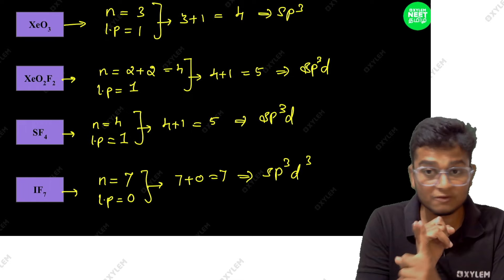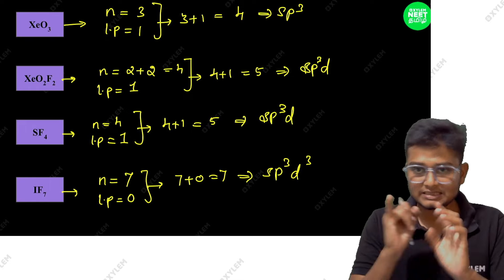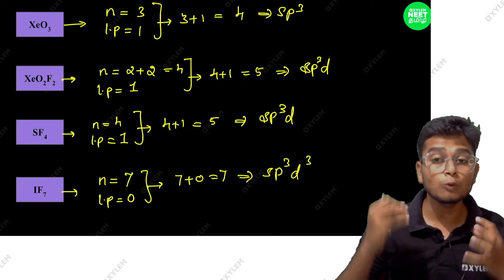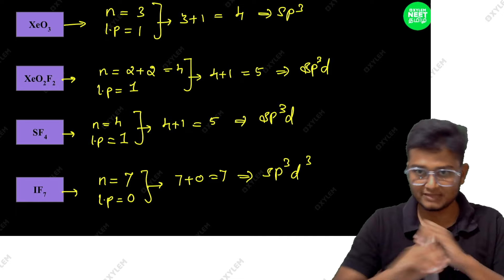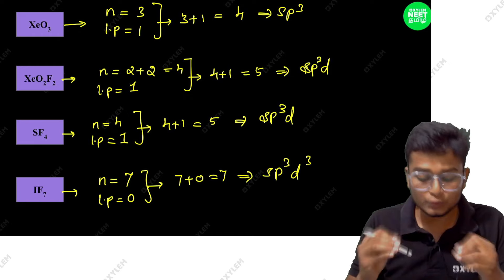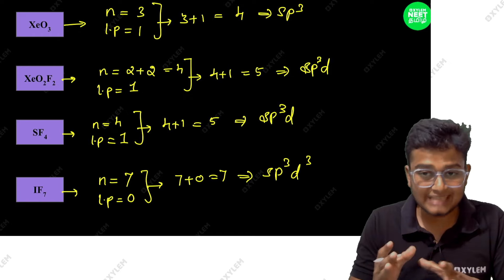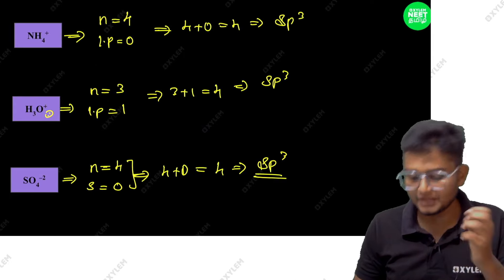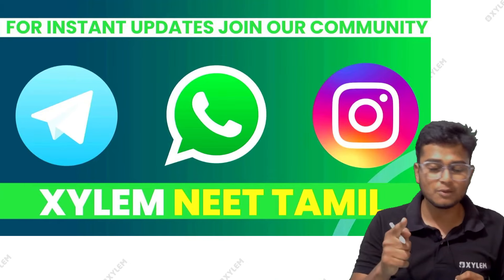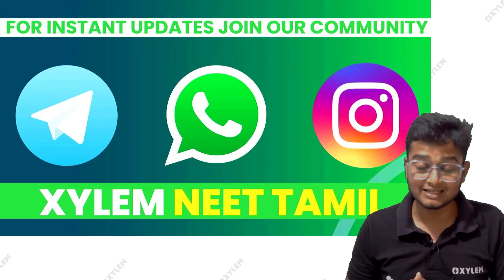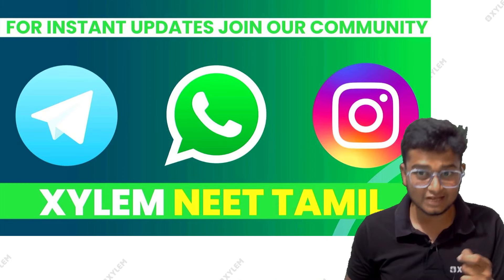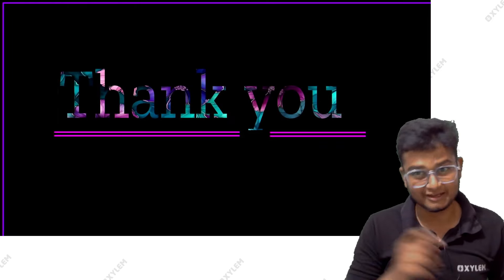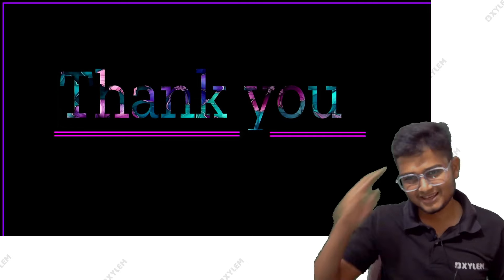You have to know the number of elements and lone pairs — that is all. This is a very easy and very useful method for time management. Use it. If you like this session, please like it and don't forget to subscribe to our Xylem Neet Tamil channel. PDF links are in the description. See you in another session. Until then, your favourite chemistry educator Anish — bye, stay well.